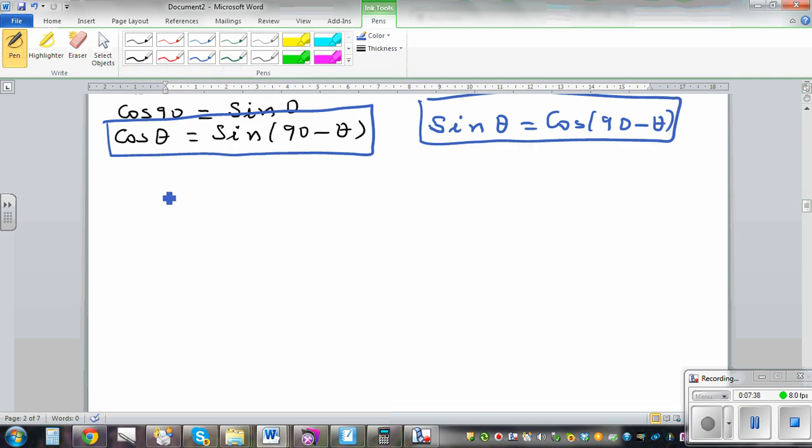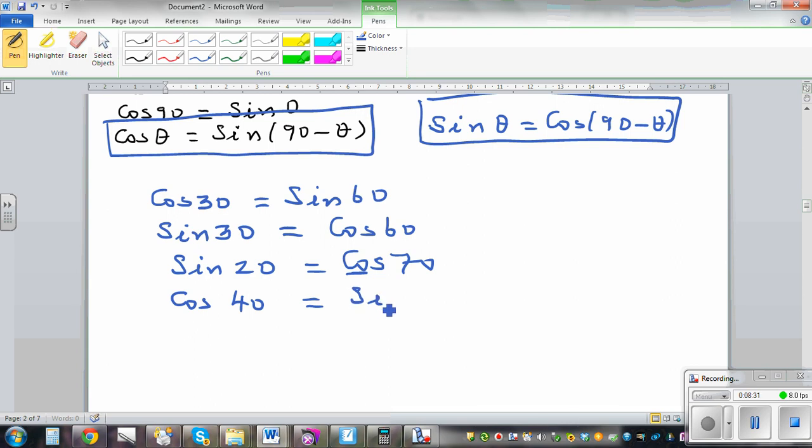So I can say, cos 30 should be how much? Sine 60. Can I say sine 30 should be cos 60. Or, for that matter, these are exact, you can find exact values, sine 20 is equal to cos 70. And that's why cos is basically the complementary of sine. And complementary are, in maths, complementary are two angles which adds up to 90. So, can you see, 20 plus 70 is 90, 30 plus 60 is 90. Or, say, cos 40 is equal to sine 50. So, let me show this on the calculator.